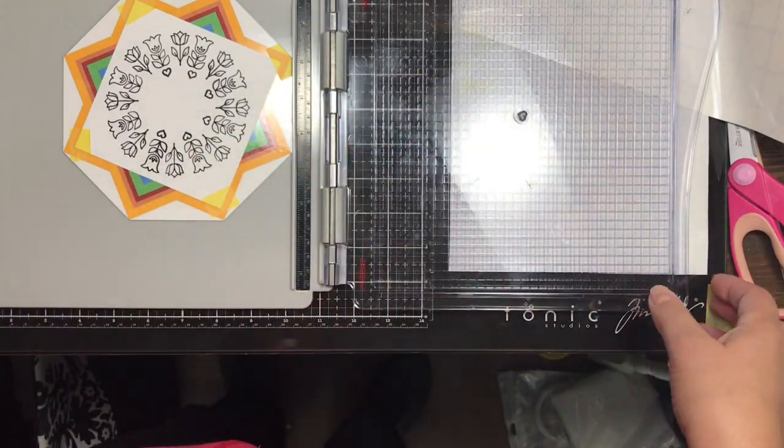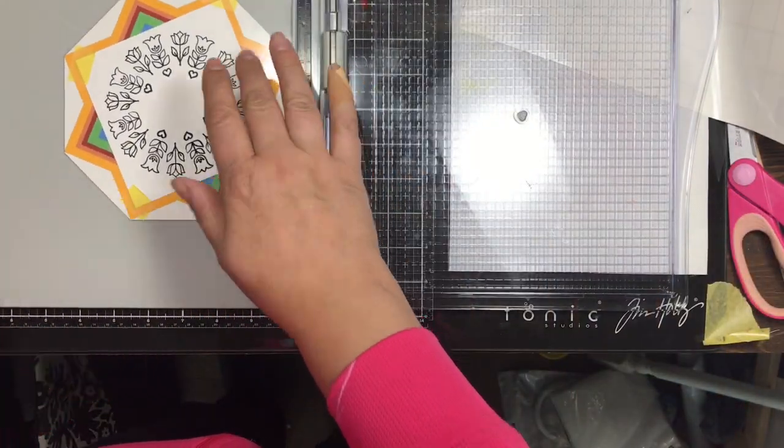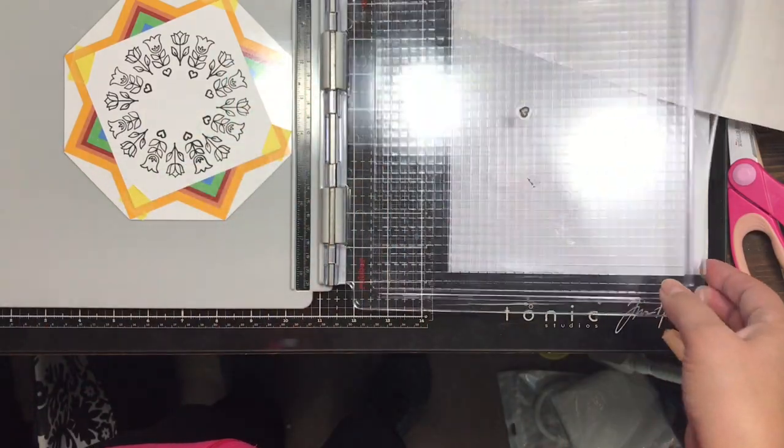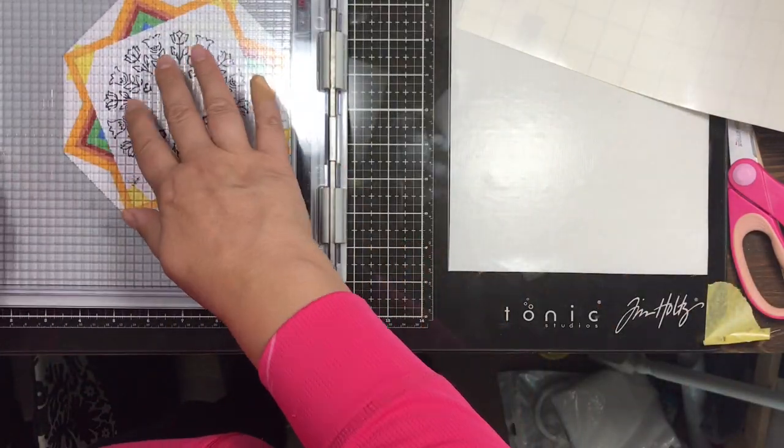The coloring I did on this was pretty basic, so rather than have you watch me color, I'll just put the assembled card when it's all complete and then I'll show you how I put that together. Then I'll show you an example of another one that I did using the same template.